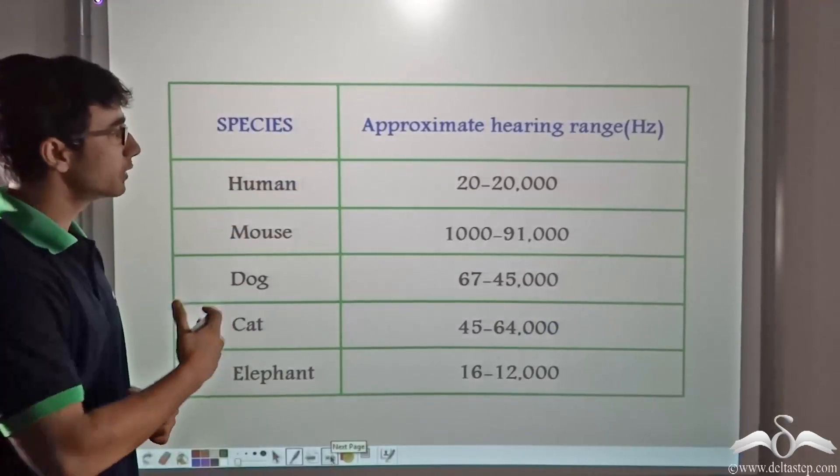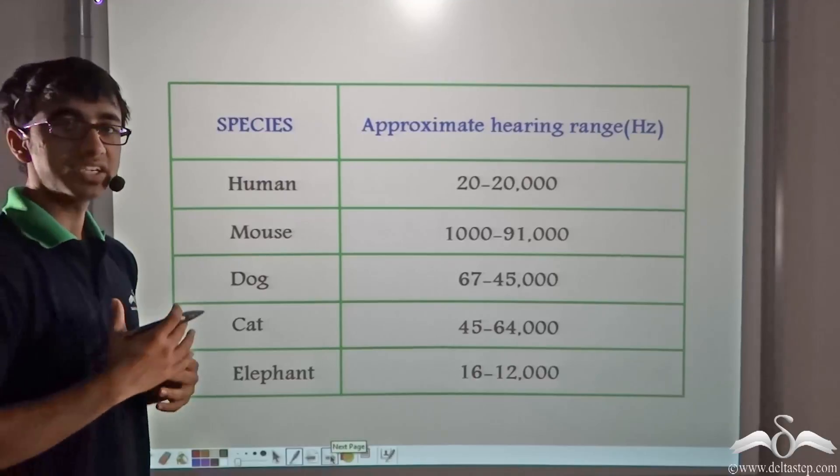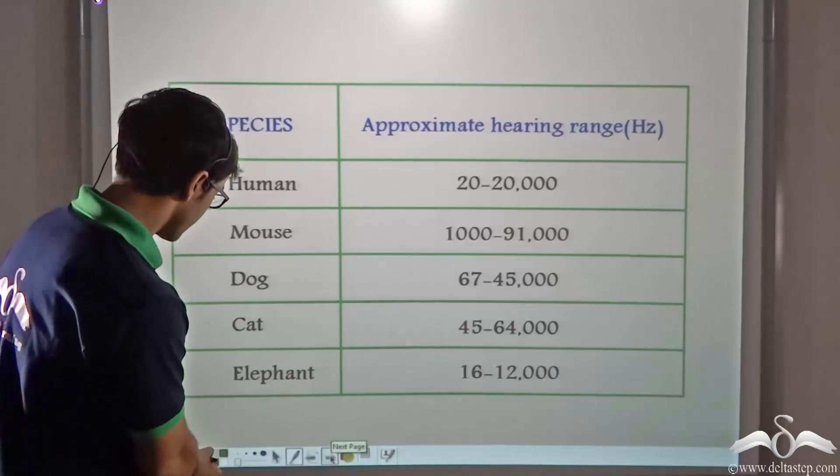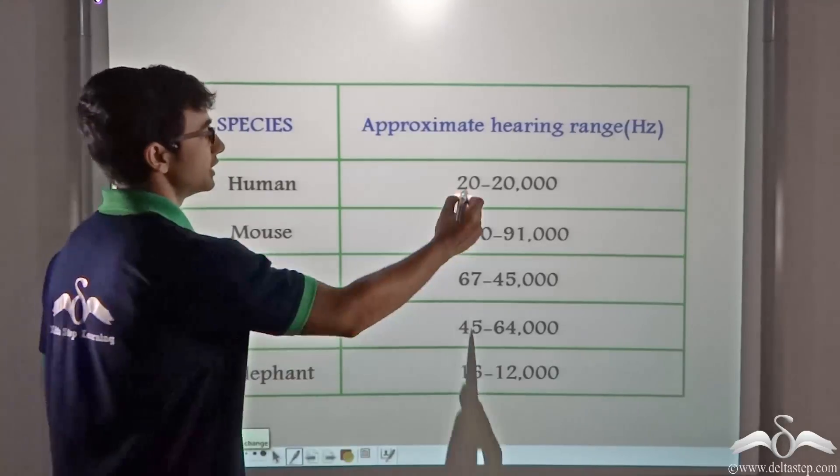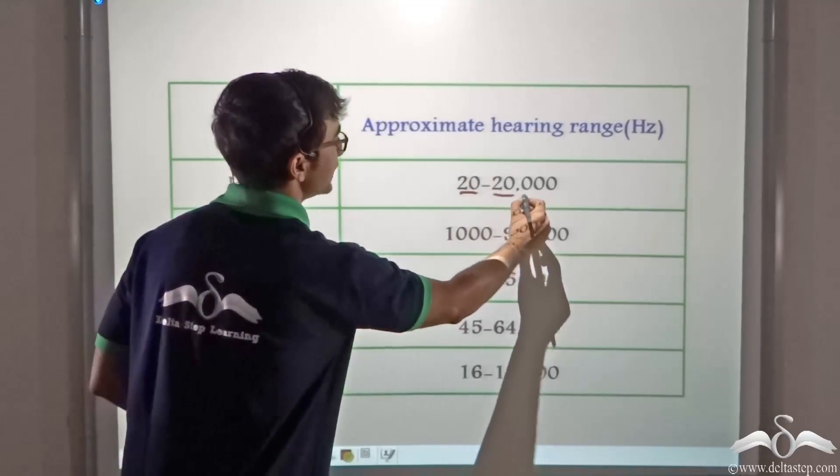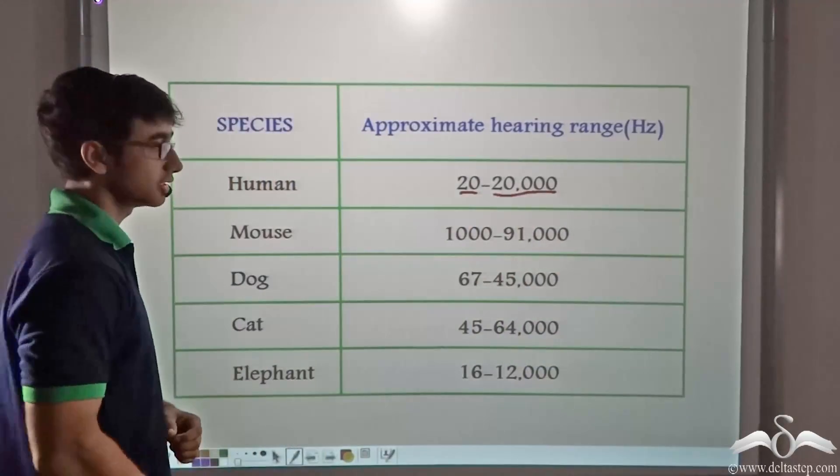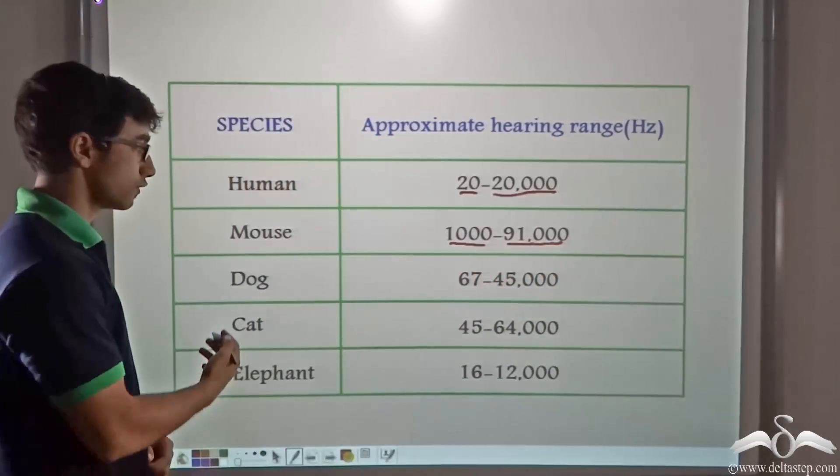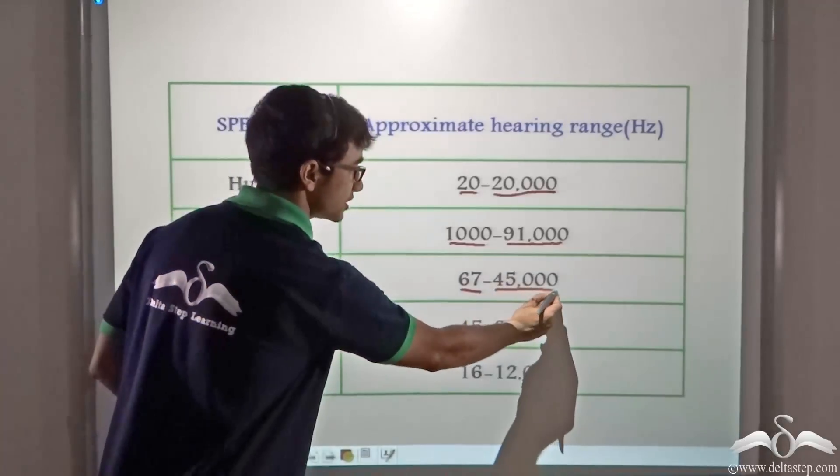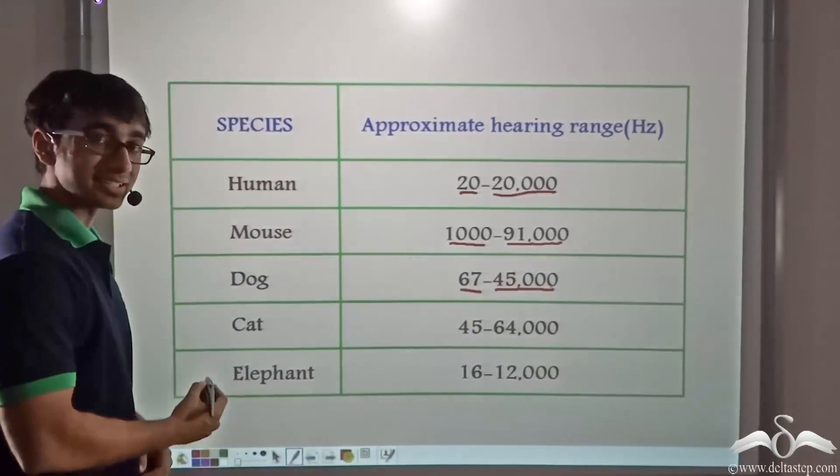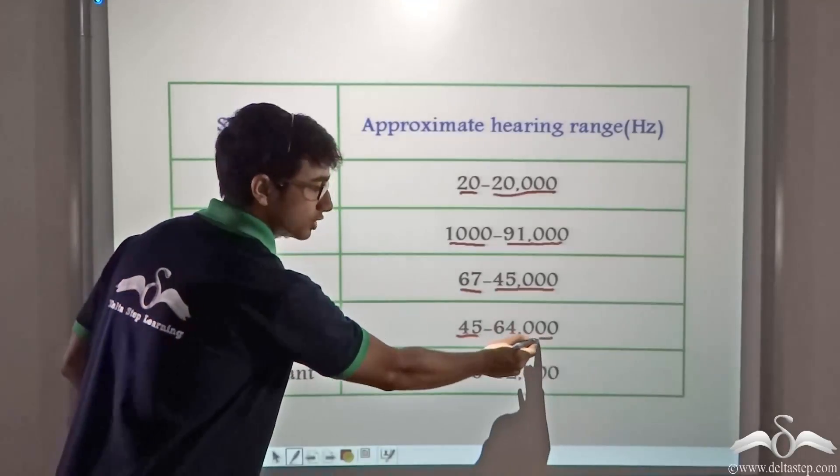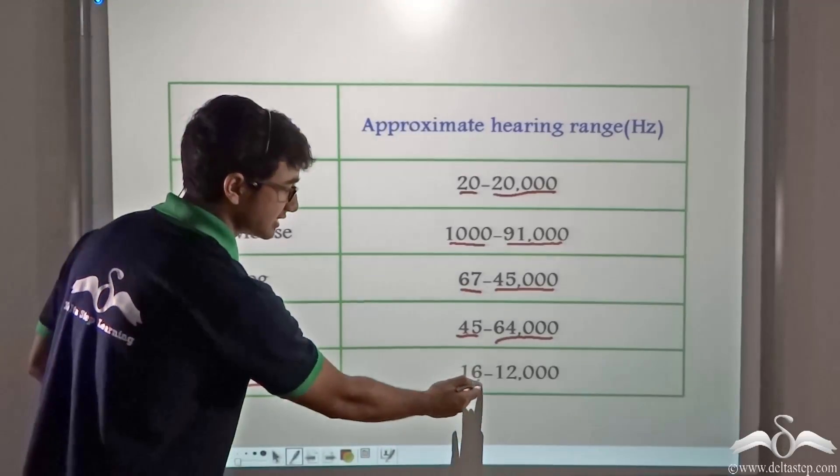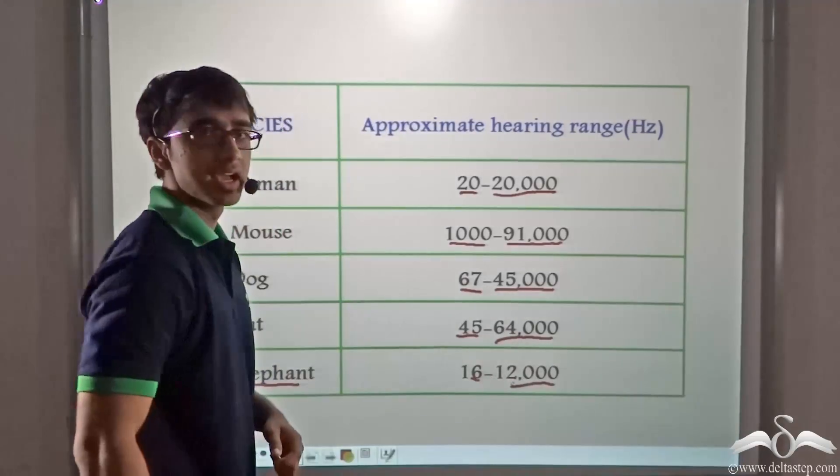So the following chart illustrates what the different audible range of frequencies are for different animals. As we just studied, for a human being the audible range is 20 to 20,000 Hertz. For a mouse it is 1000 to 91,000 Hertz. For a dog it is 67 to 45,000 Hertz. For a cat it is 45 to 64,000 Hertz, and for an elephant it is 16 to 12,000 Hertz.